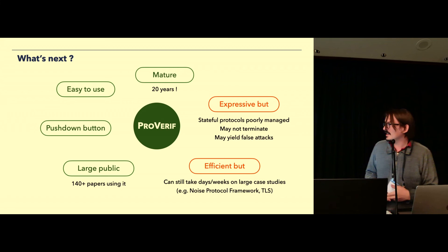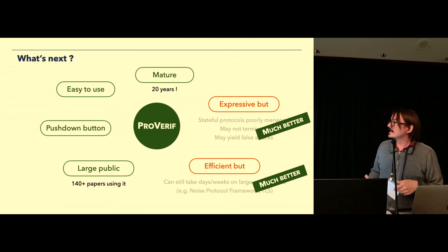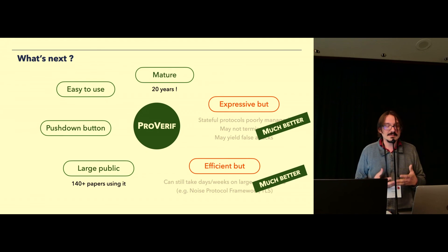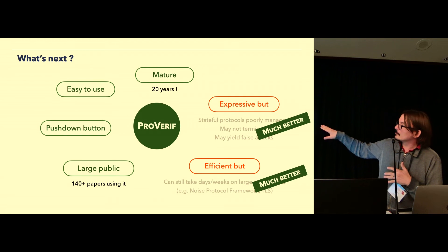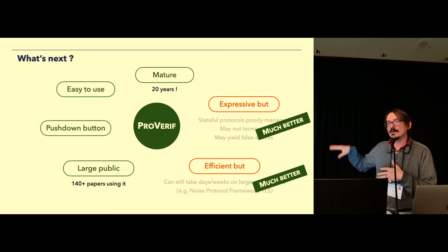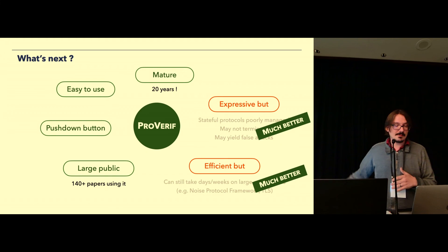So what's next for ProVerif? So that was the state of ProVerif 2. And with this paper, we definitely did much better in terms of expressivity and efficiency. So I didn't completely remove the gray. It's still gray because, of course, it's undecidable. So there will always be cases where it does not terminate or yields false attacks. But we still do much better in terms of expressivity.